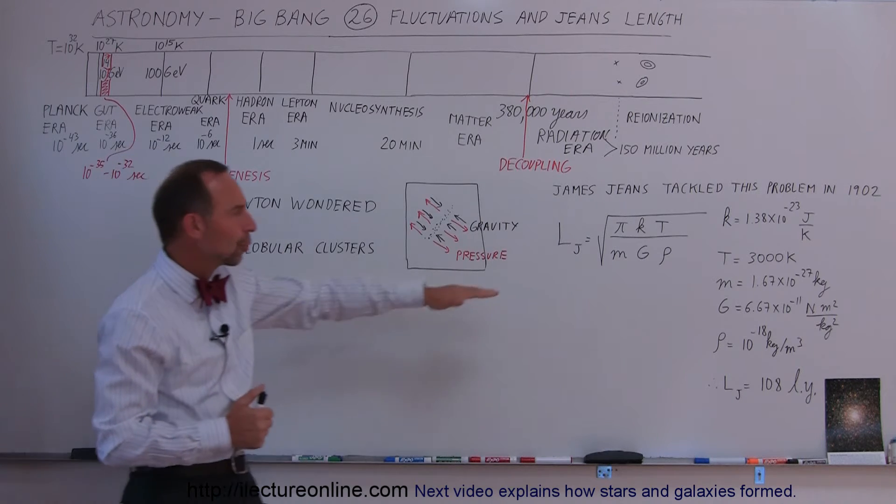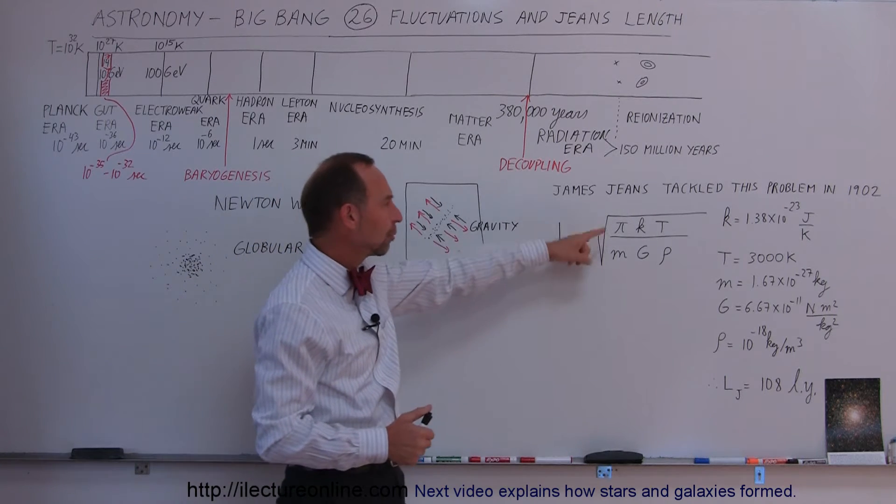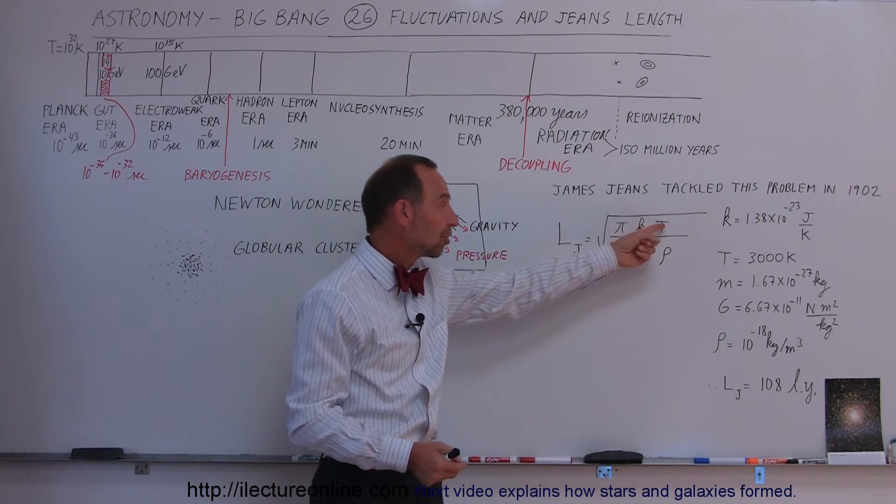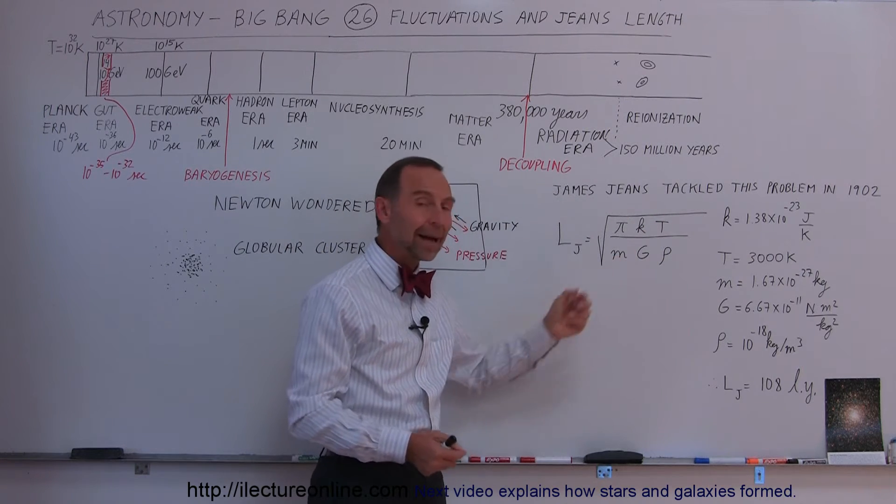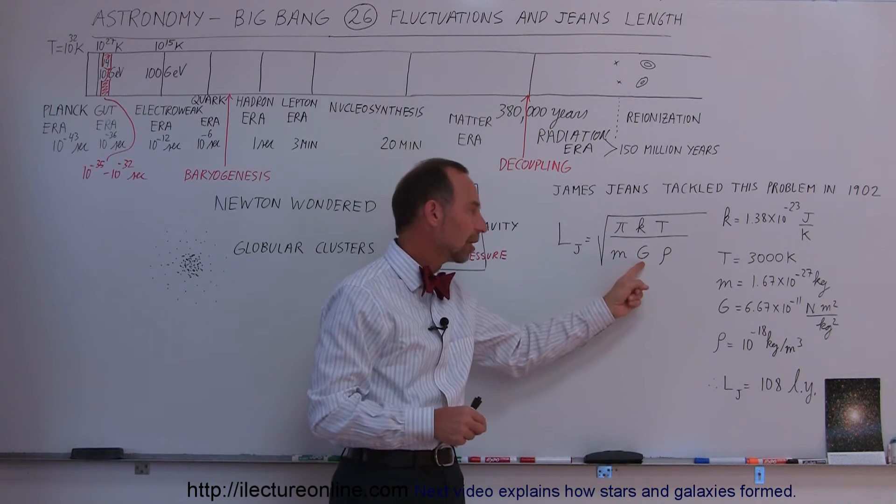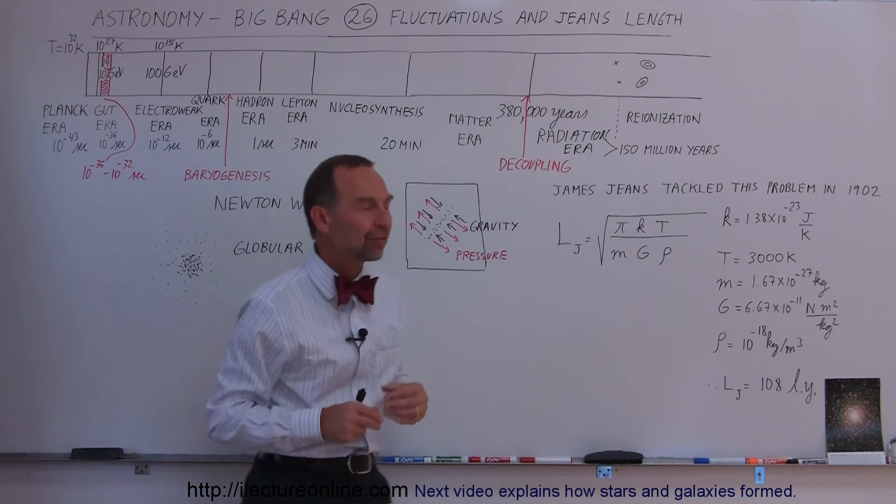We call that Jeans length and here's the equation. Jeans length is equal to the square root of π times k, which is the Boltzmann's constant, times the temperature of the gas divided by the mass of the atoms in the gas, divided by the gravitational constant, and divided by the density of the gas.